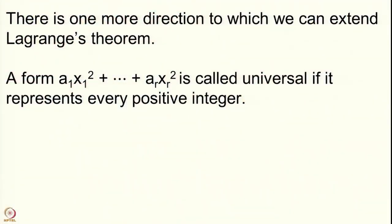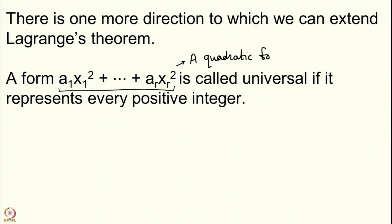We now want to go in another direction to generalize Lagrange's theorem. Lagrange's theorem says that every natural number is represented by the form x² + y² + z² + w². We are now going to allow some coefficients here. We consider a quadratic form in r variables: a₁x₁² + a₂x₂² + ... + aᵣxᵣ², where the aᵢ are natural numbers.